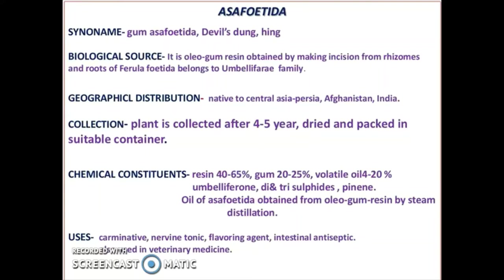Chemical constituents: resin 40 to 65%, gum 20 to 25%, and volatile oils 4 to 20% — umbelliferone, di- and trisulphides, pinene. Oil of asafetida is obtained from the oleogum resin by steam distillation. It is used as a carminative, nervine tonic, flavoring agent, intestinal antiseptic, and also in veterinary medicine.